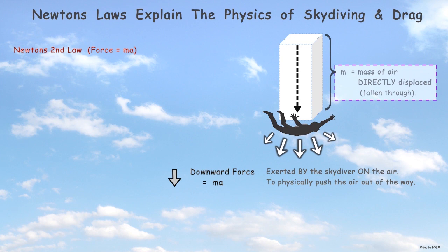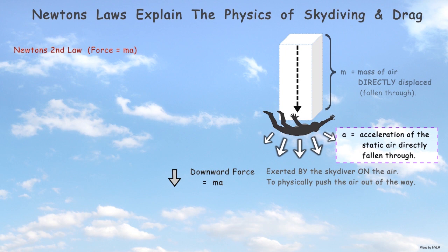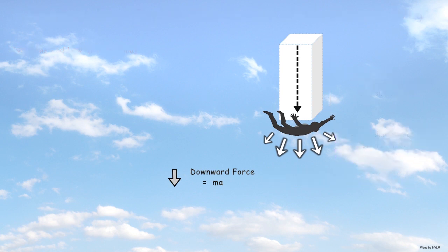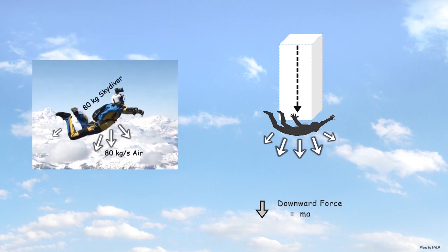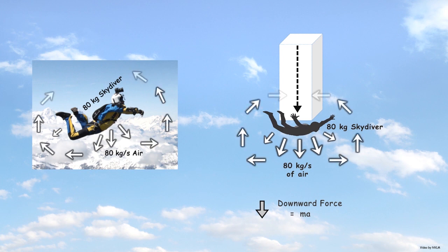By multiplying the mass of air directly fallen through by the velocity that this static air is accelerated to. The downward force physically pushes the air out of his way, thus circulating the air that they fly through.